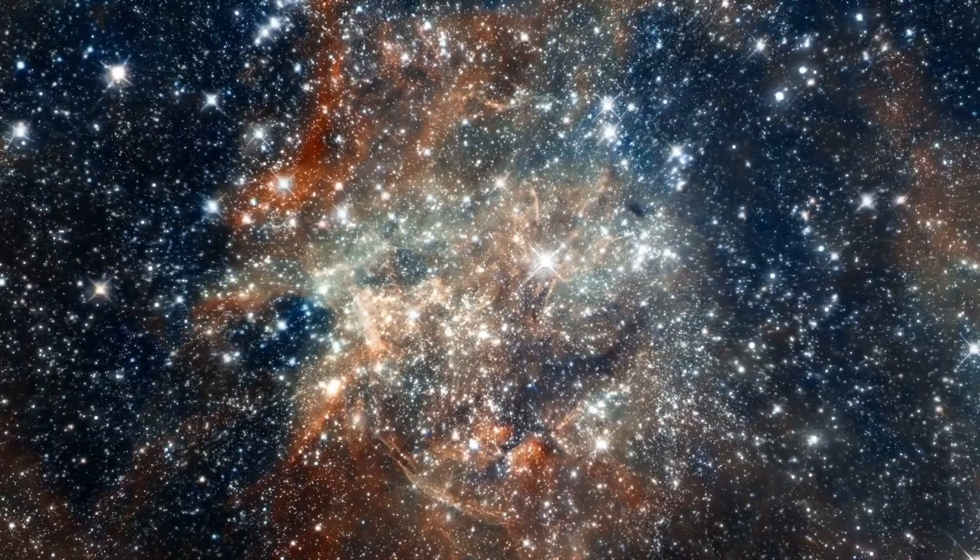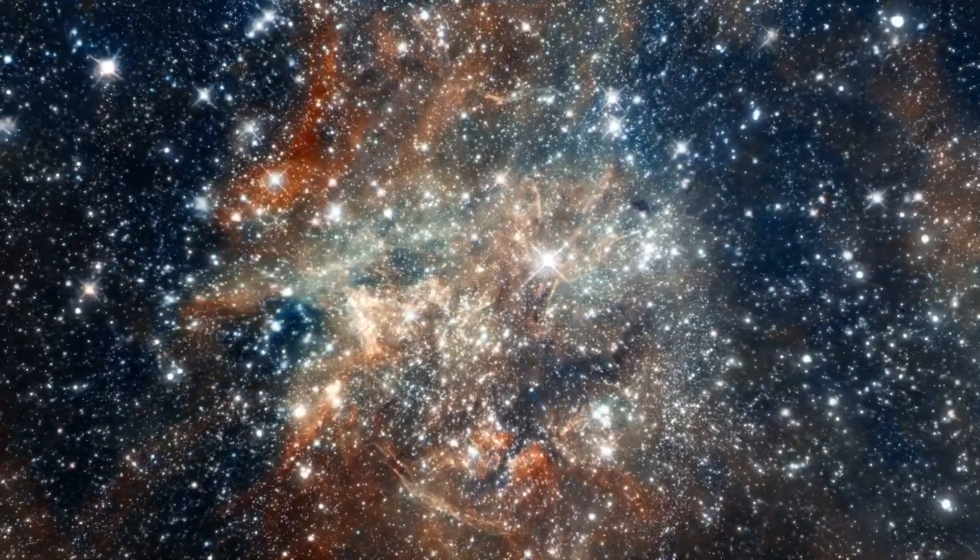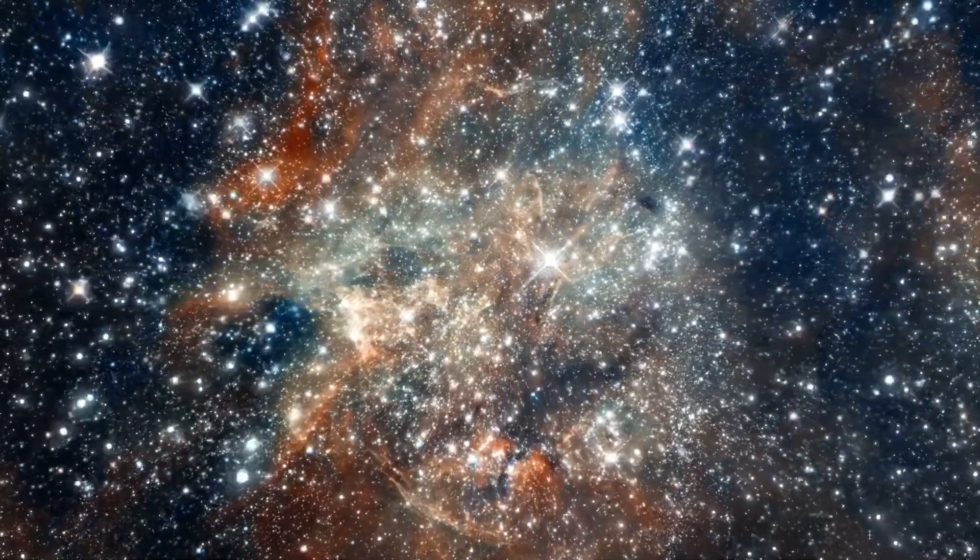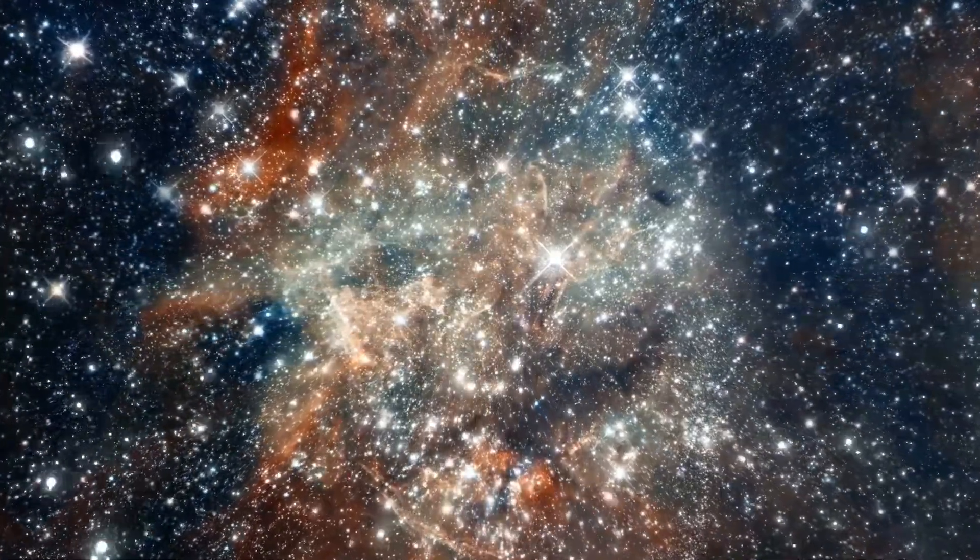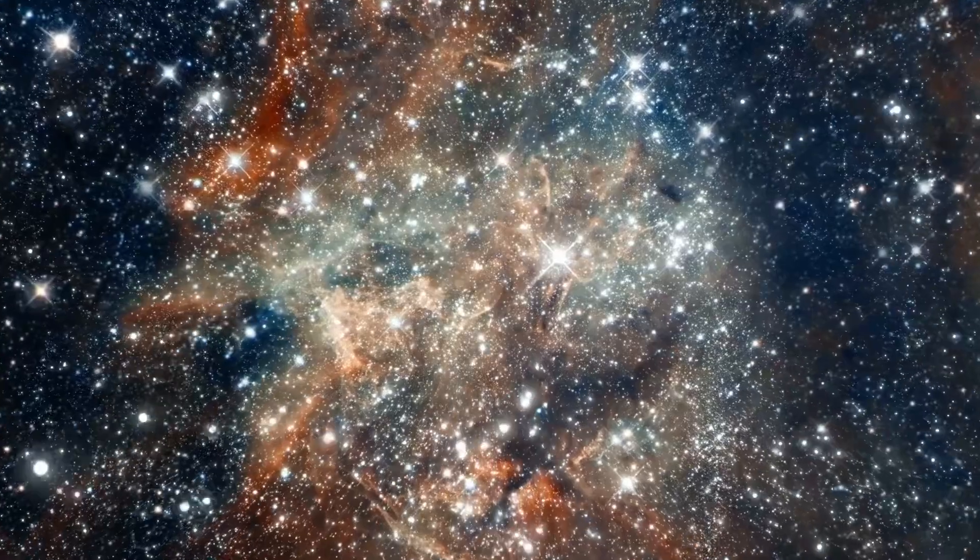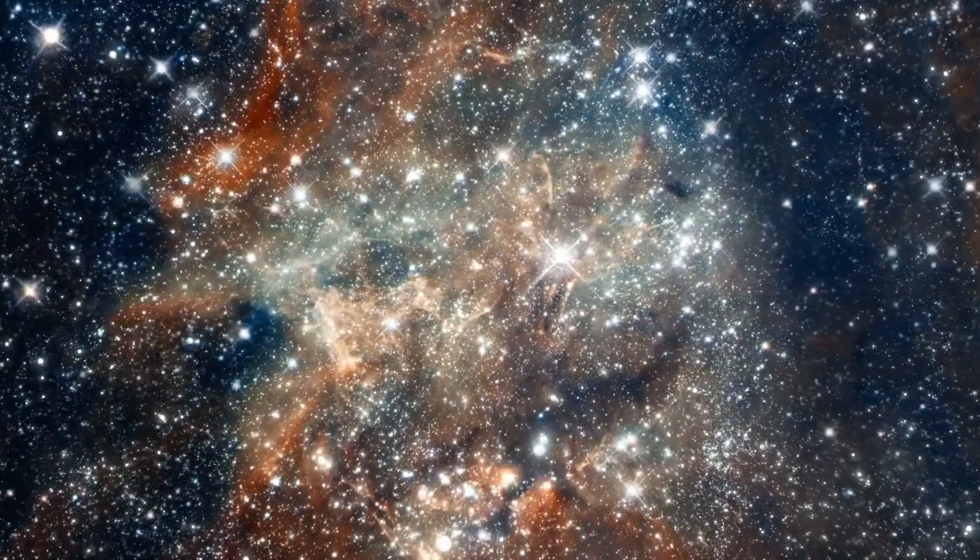Stars have different colors depending on their temperature. The hottest stars appear blue or white, while coolest stars appear red or orange. The color of a star can tell us about its age and size.